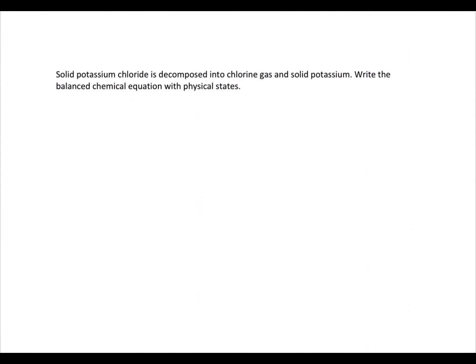Solid potassium chloride is decomposed into chlorine gas and solid potassium. Write the balanced chemical equation with physical states. Potassium chloride is written as KCl, and it is solid, so you have an (s). It is decomposed to form chlorine gas and solid potassium.